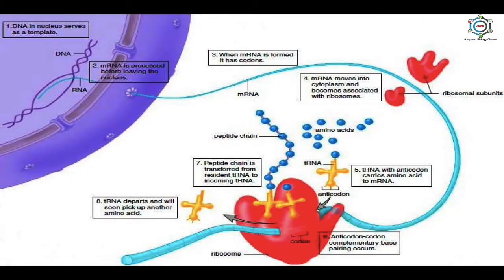DNA in the nucleus serves as a template; mRNA is processed before leaving the nucleus. When mRNA is formed, it has codons and moves into the cytoplasm, becoming associated with ribosomes. tRNA with the anticodon carries amino acid to the mRNA; anticodon-codon complementary base pairing occurs. The peptide chain is transferred from the resident tRNA to the incoming tRNA. The tRNA departs and picks up another amino acid. This is the complete process of translation.